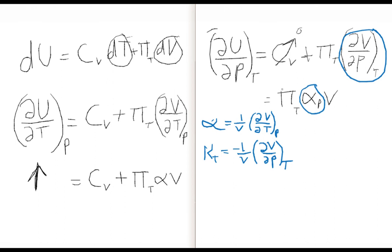So really what we want, the thing we want up here, the change in internal energy with pressure at constant temperature, is just going to be equal to πT times negative κv. We've got a v and a negative sign out here. So a little bit different from our original one. So please note that change.